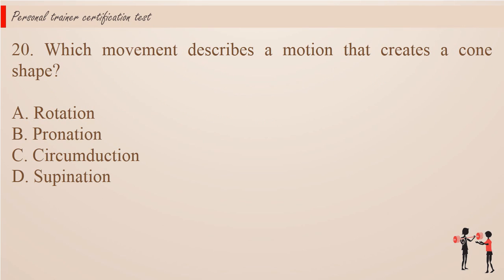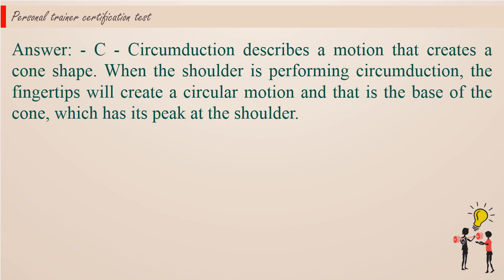Question 20. Which movement describes a motion that creates a cone shape? Answer: c. Circumduction describes a motion that creates a cone shape. When the shoulder is performing circumduction, the fingertips will create a circular motion and that is the base of the cone, which has its peak at the shoulder.